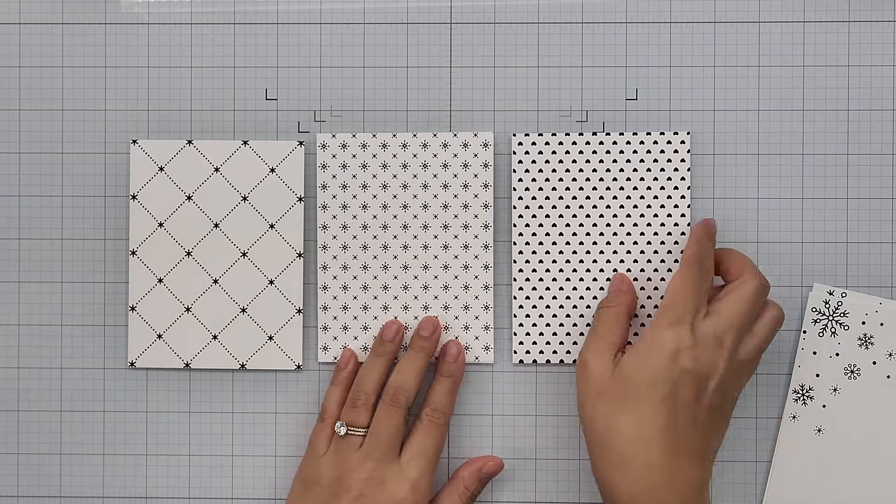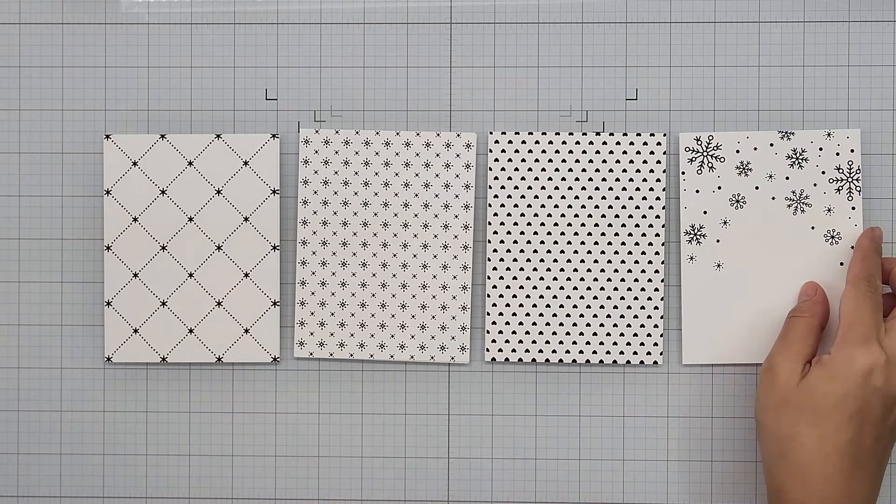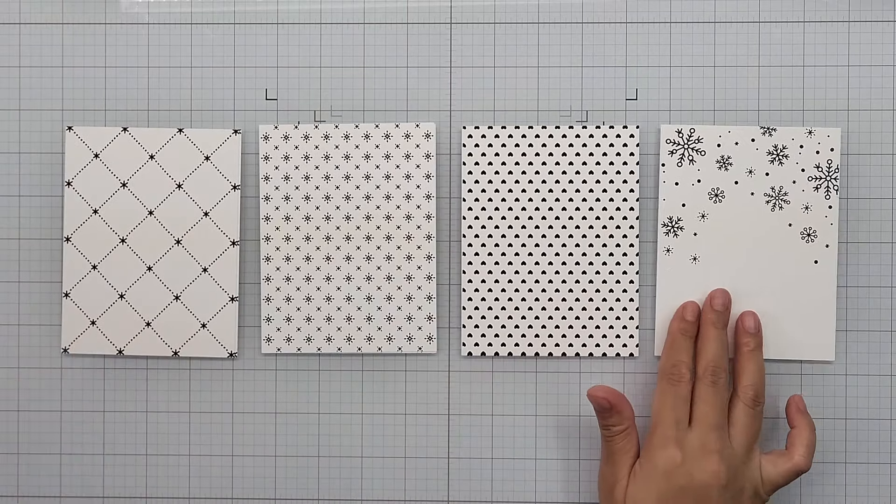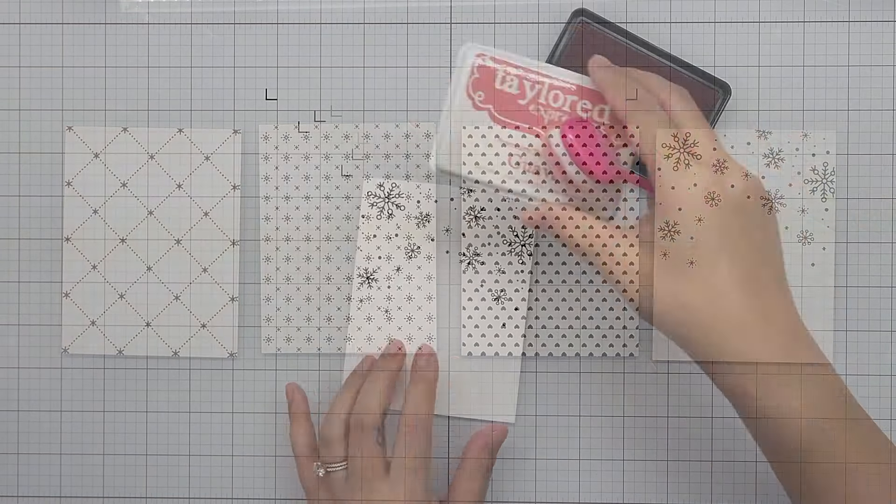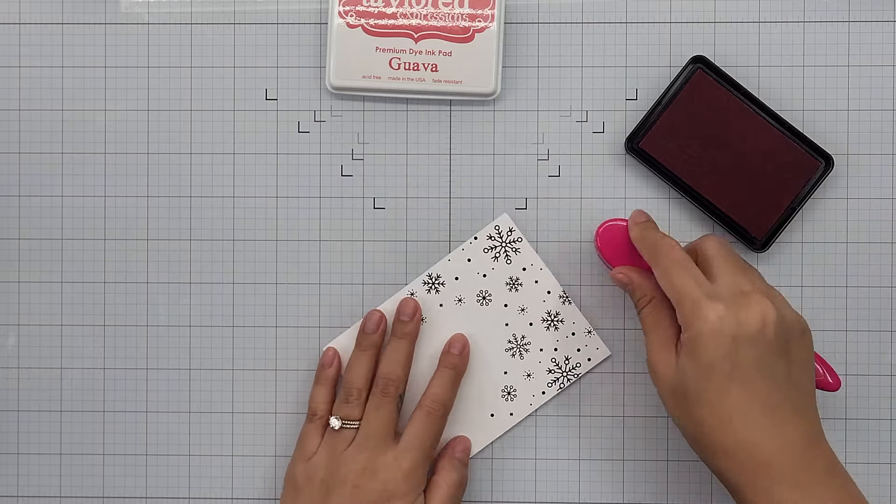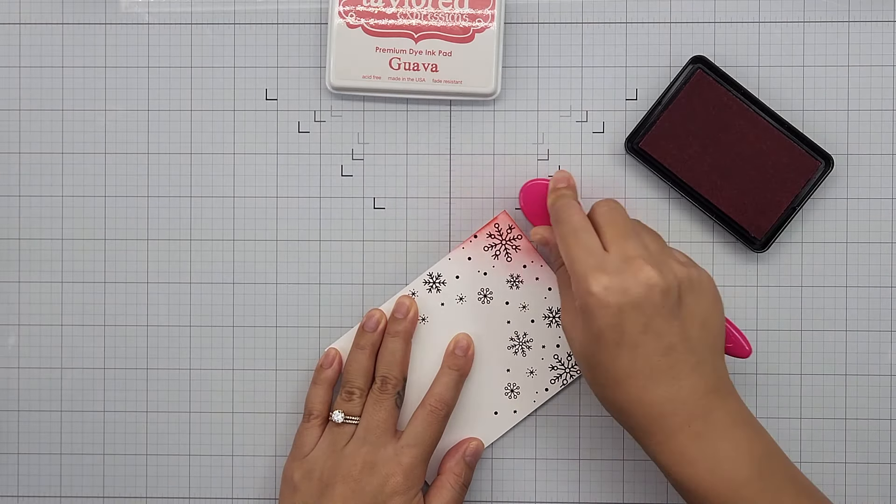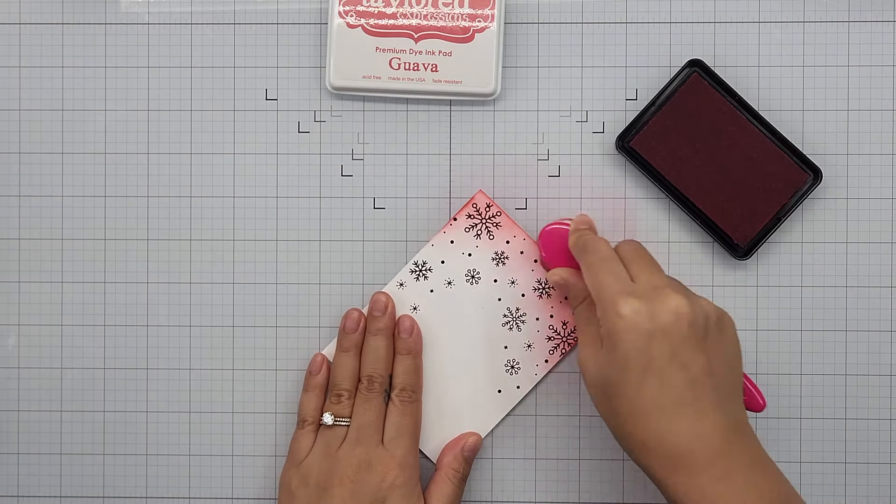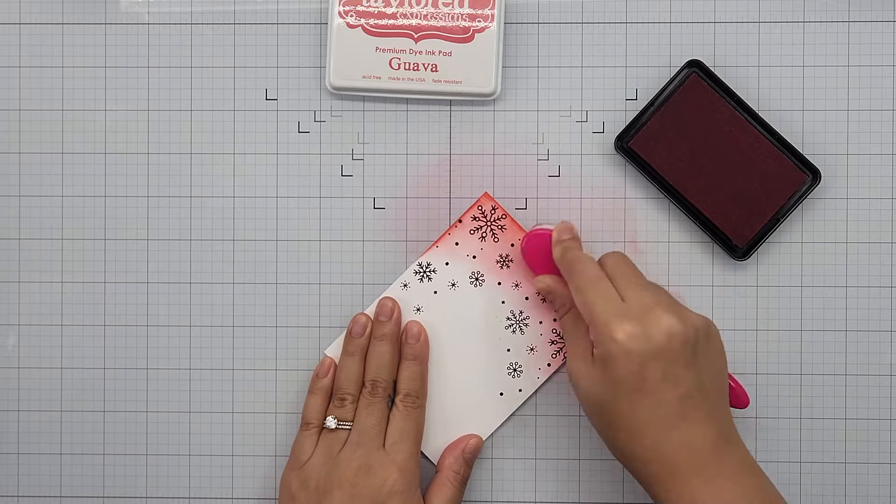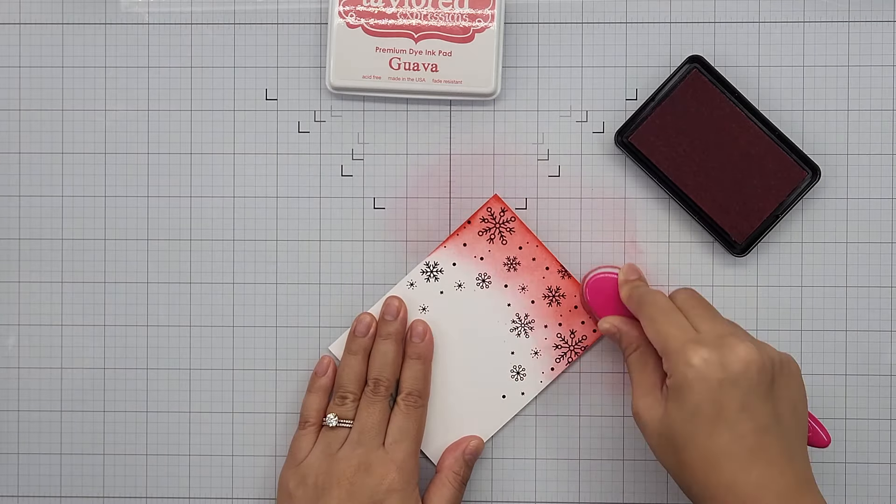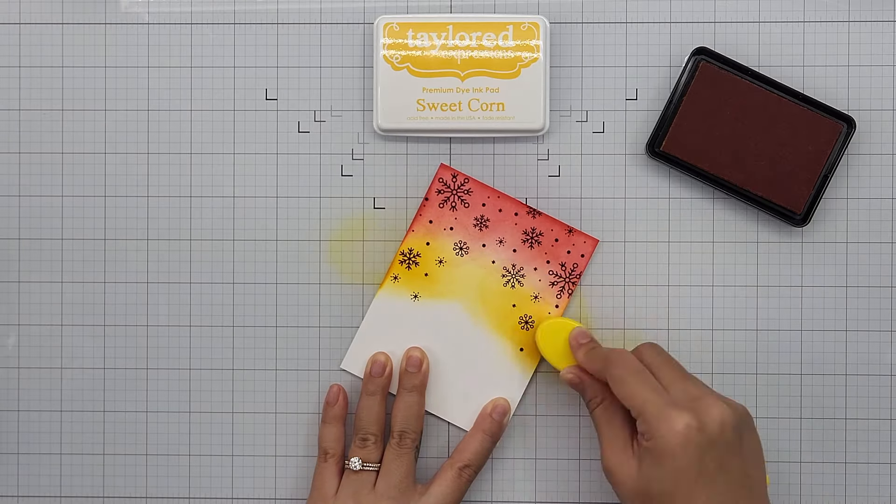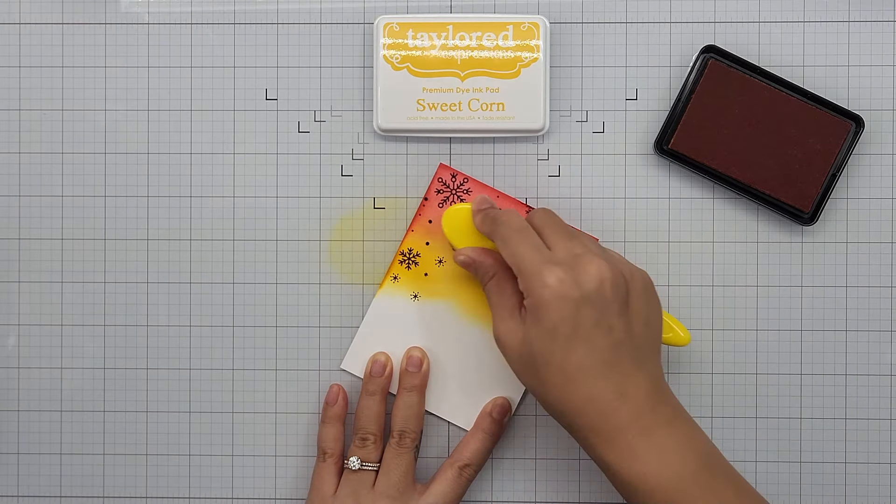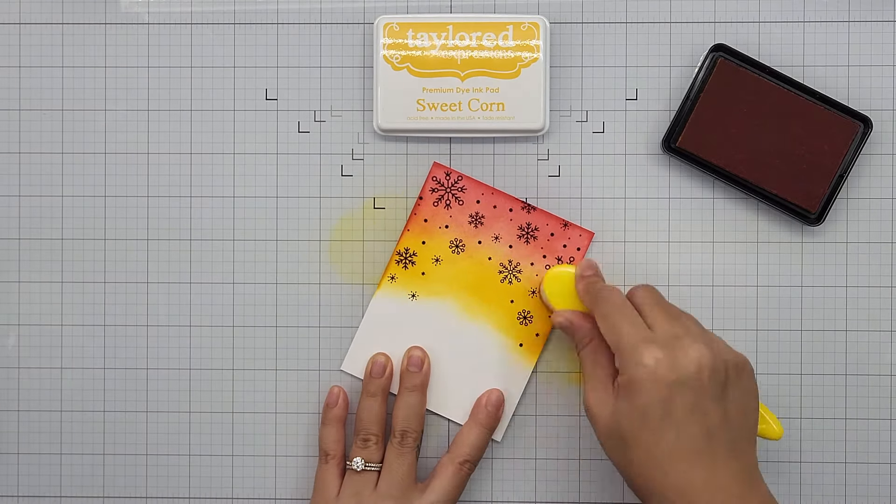Now for the foiling part. The Bear Hugs Foil It pack has four different designs. I am using the one on the far right hand. Before I begin the foiling, I wanted to ink blend the Foil It panel. I am using Guava ink and blending that on the upper portion of the card panel. Then going in with Sweet Corn, I am blending that next to Guava. I am making sure to blend between the two colors to create a seamless blend.